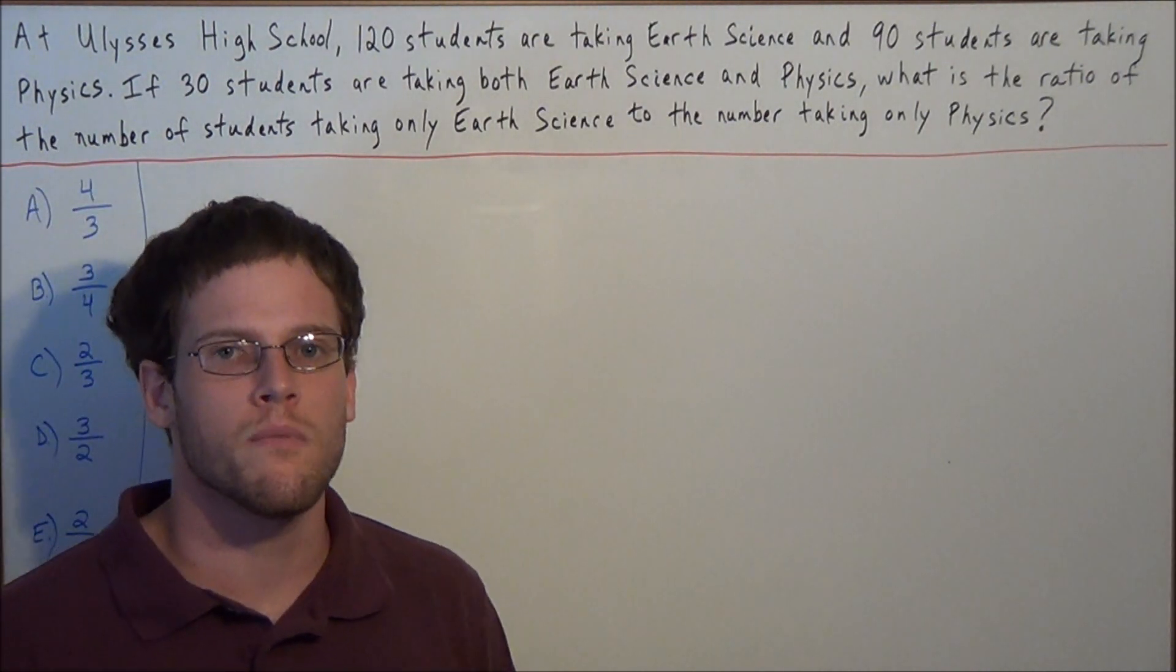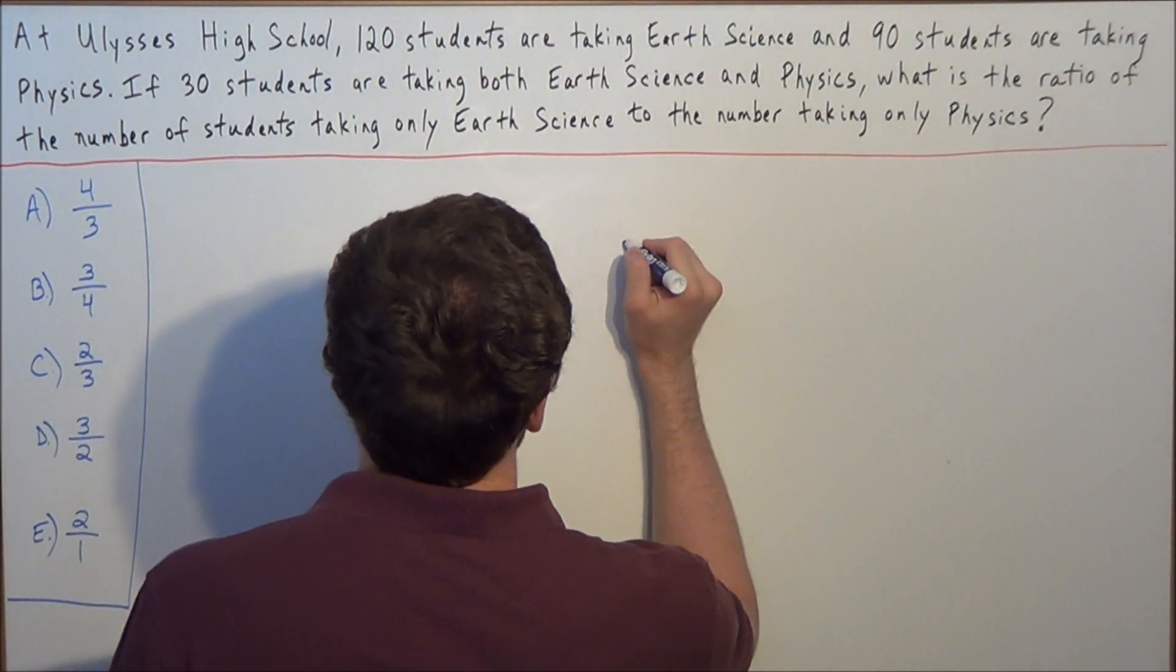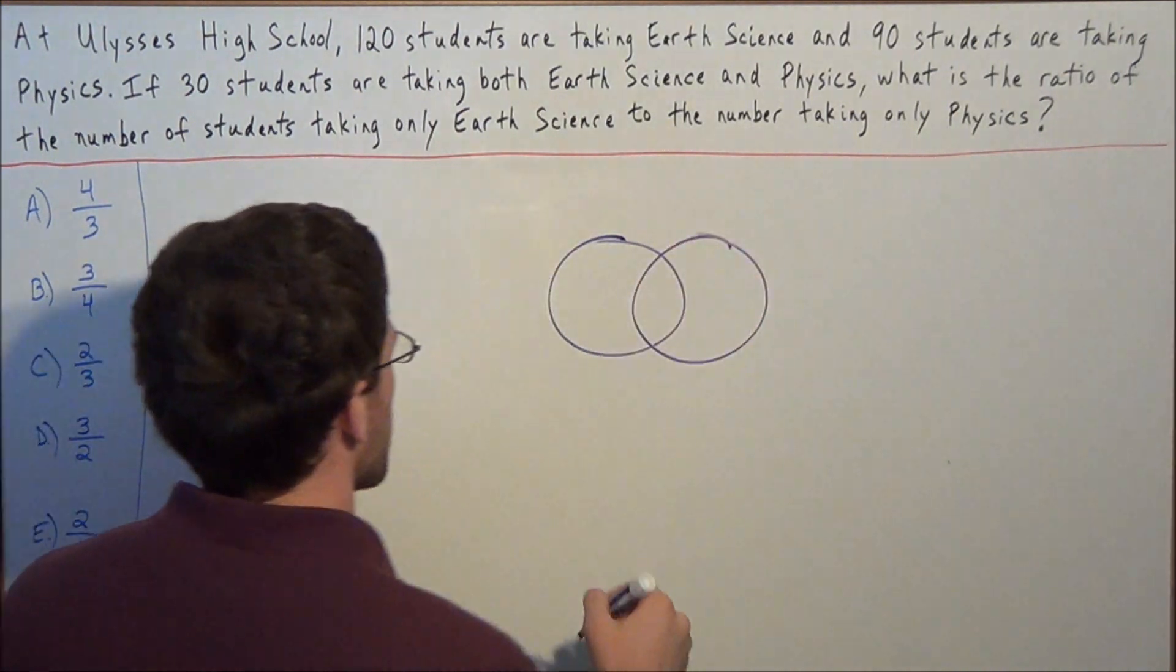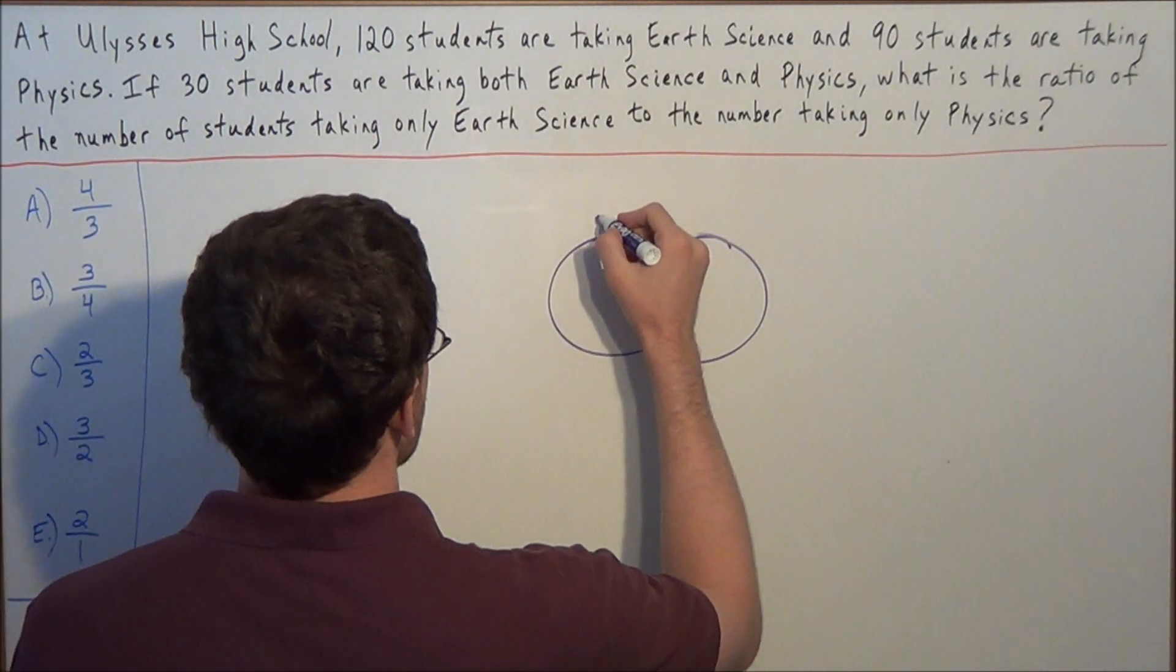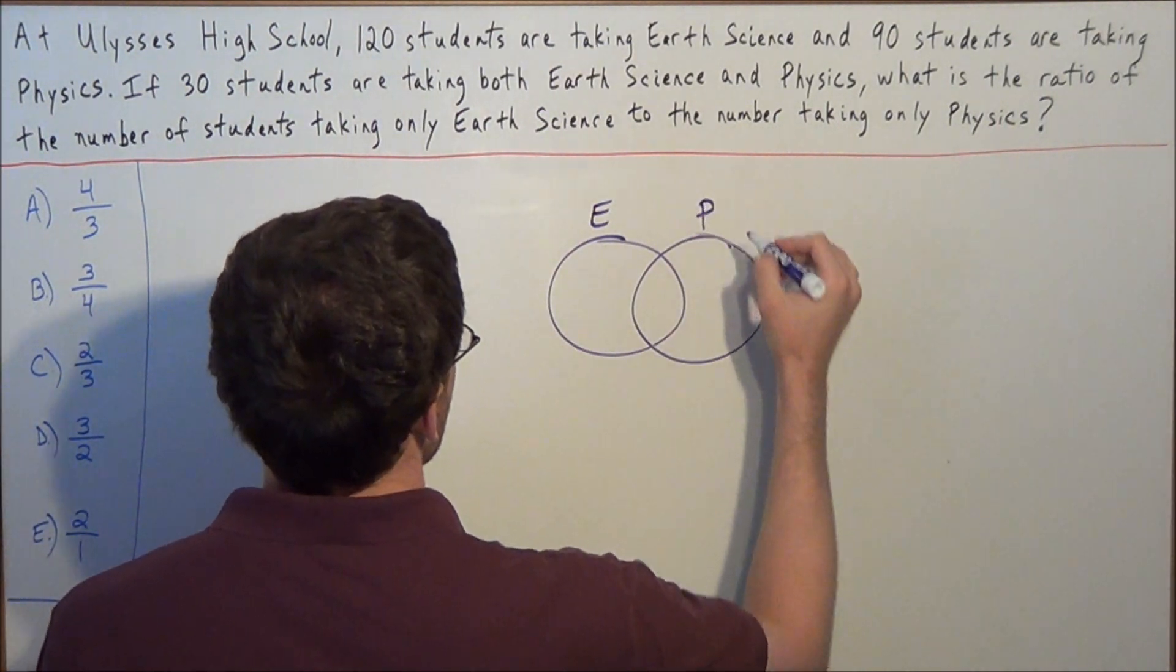So for this problem, we want to make use of a Venn diagram. With counting problems, a Venn diagram can be an excellent tool for finding the right answer. So we start off with two circles, we can label the first circle E for Earth Science, and we can label the second circle P for Physics.